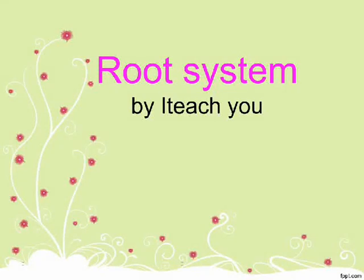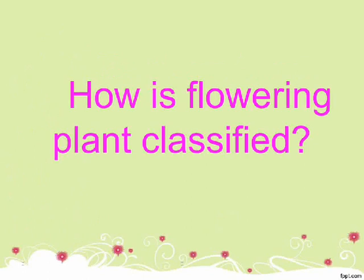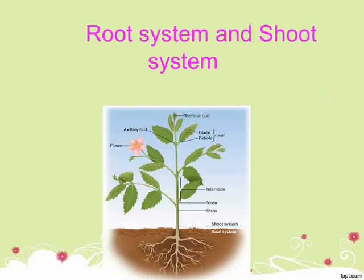Root system. How is a flowering plant classified? A flowering plant is classified into a root system and a shoot system.